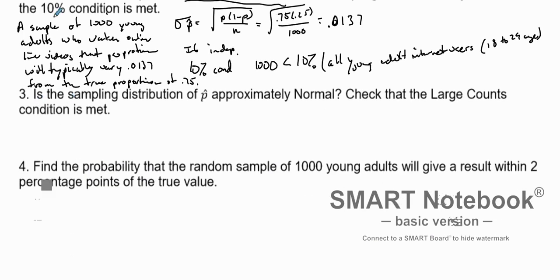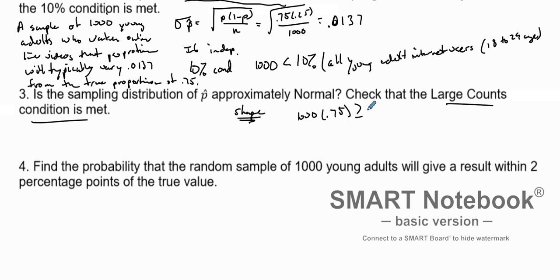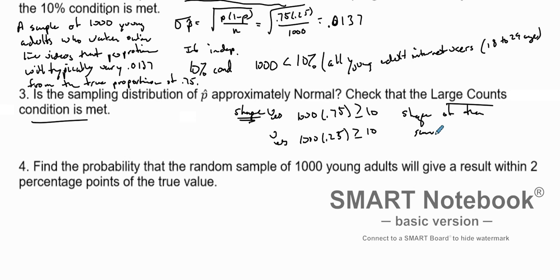Now we've done center and spread, so let's look at shape. Is the sampling distribution approximately normal? We use the large counts condition. Is 1000 times 0.75 greater than or equal to 10? Yes. Is 1000 times 0.25 greater than or equal to 10? Yes. So the shape of the sampling distribution is approximately normal.